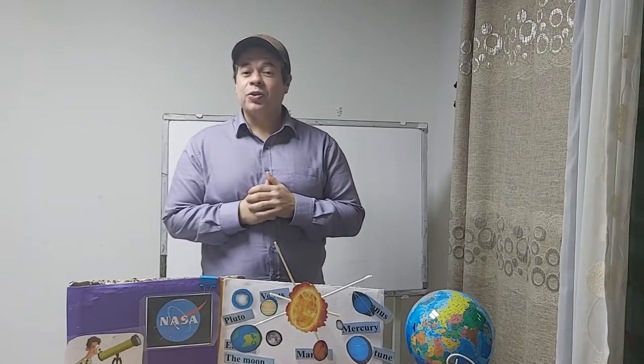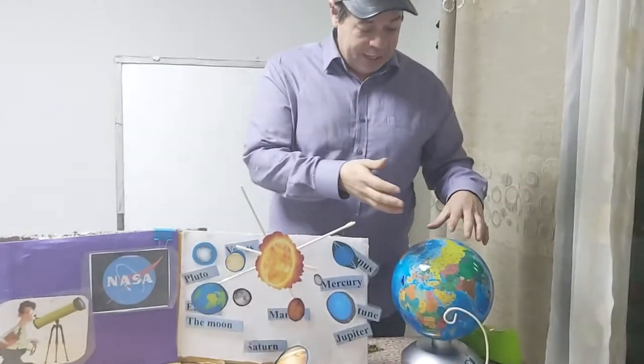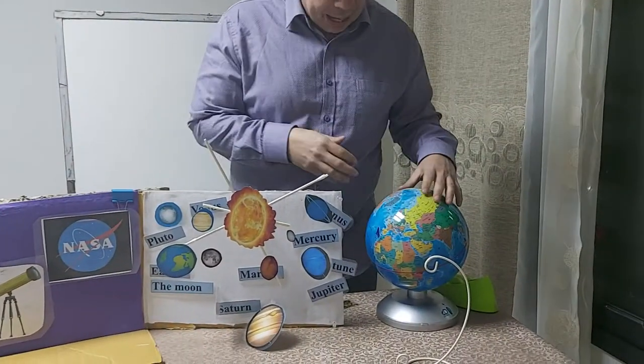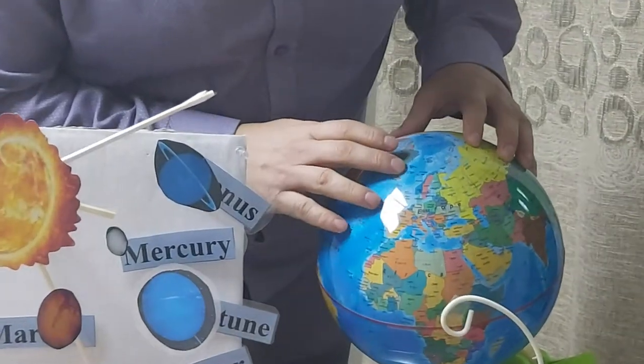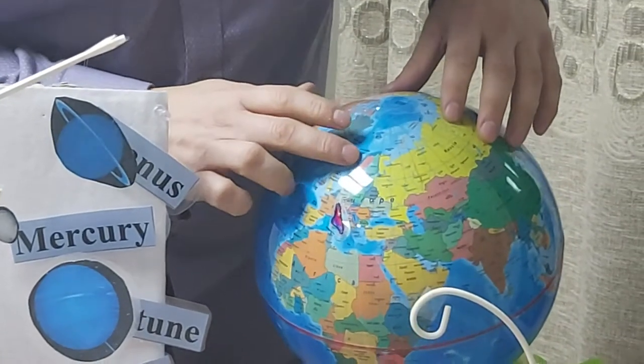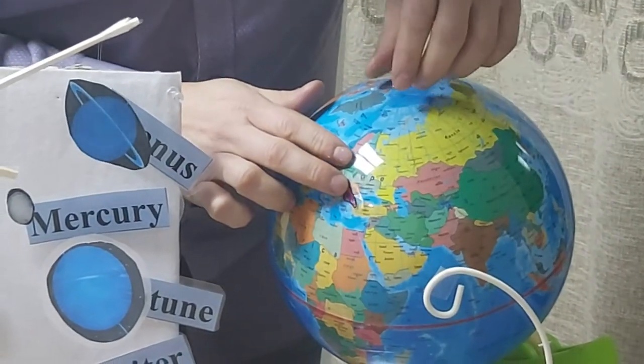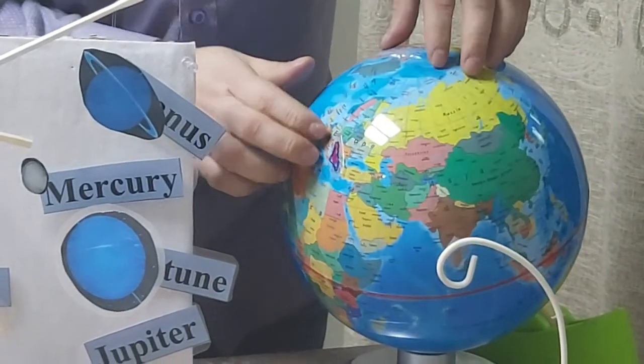Today we are going to look at a story from the country of Israel. Where is Israel on the map, on the globe? Well here is Israel. Now Israel is also known as Palestine and Palestine is bordering Syria, Lebanon, Egypt and Jordan.